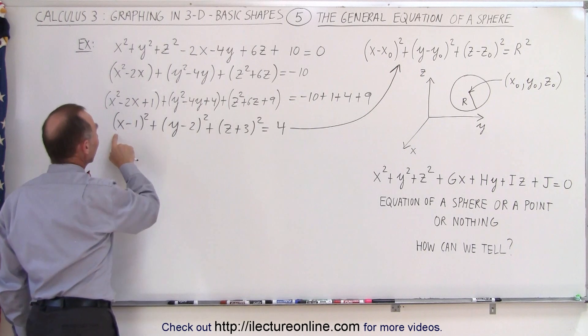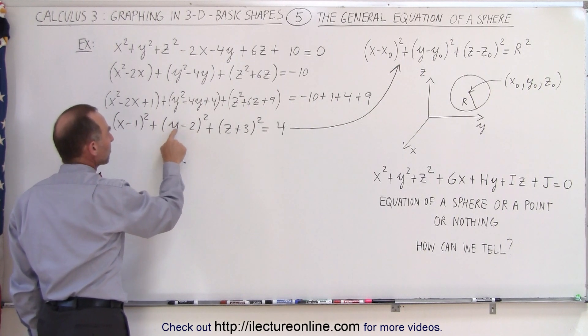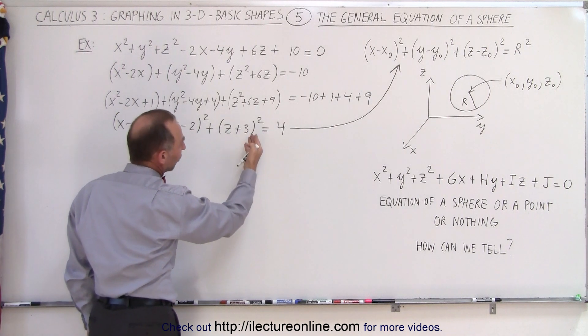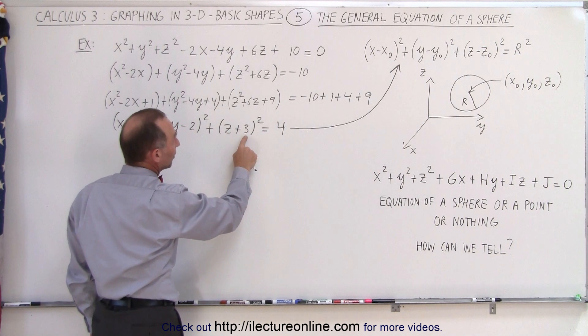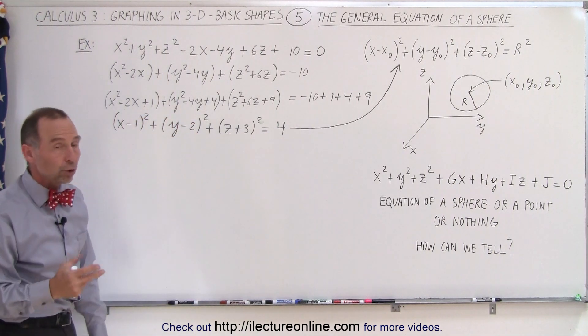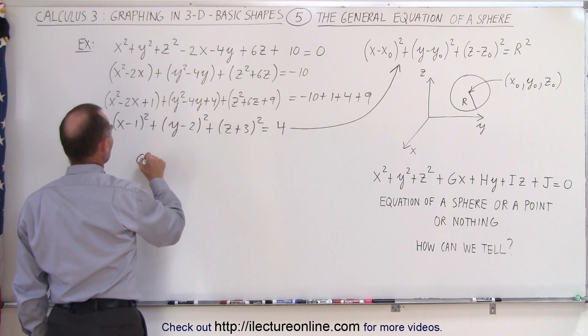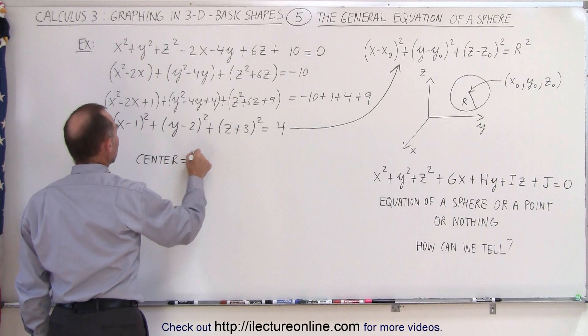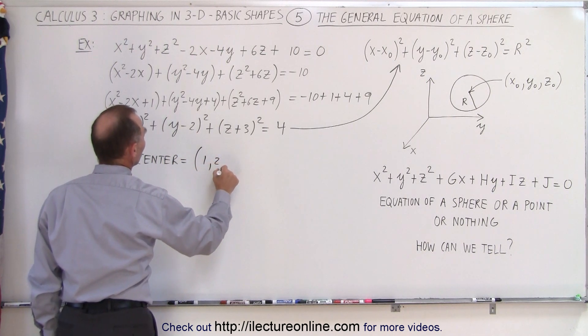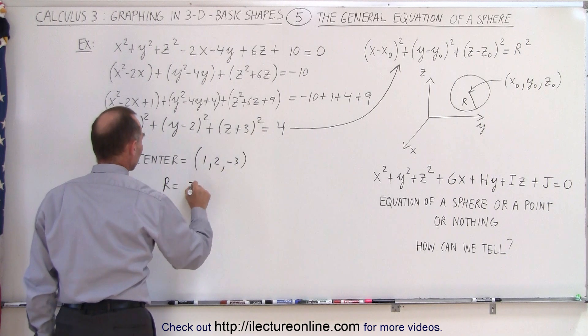And notice that plus four is actually two squared, and notice that this looks like it's in the form that we're more familiar with. It'll be x minus the constant of the x-coordinate of the center, y minus the y-coordinate of the center, z minus the z-coordinate of the center, which in this case would be negative three, and the radius would be two. So we can then say that the coordinates, the center, can be located as follows. Center will be equal at one, two, and negative three, and the radius is equal to the square root of four, which is equal to two.